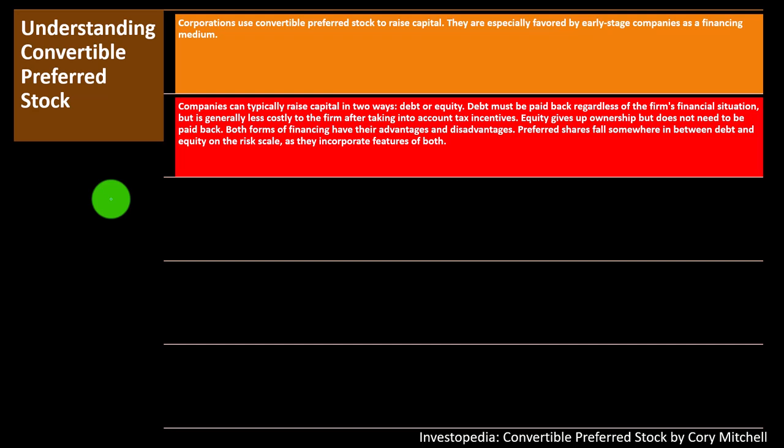Debt must be paid back regardless of the firm's financial situation, but is generally less costly to the firm after accounting for tax incentives — companies can write off interest payments as an expense. Equity gives up ownership but does not need to be paid back; if you don't pay dividends on equity, you're not in the same trouble as missing debt payments. Both forms of financing have advantages and disadvantages, and preferred shares fall somewhere in between debt and equity on the risk scale.